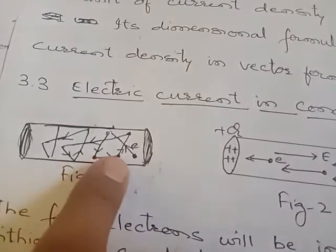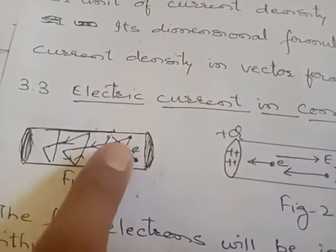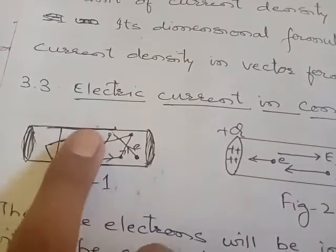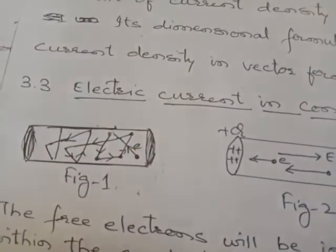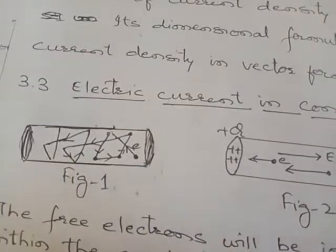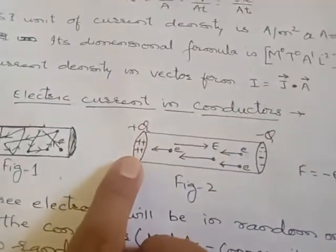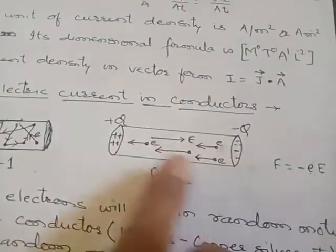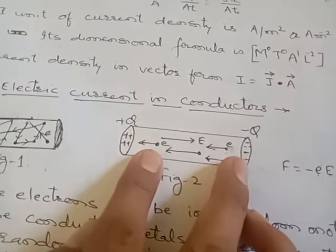So the net flow becomes zero. Millions of electrons are there in the conductor. All the electrons collide with each other and when they are colliding they are not moving in one particular direction. So for that, we connect a positive charge potential and a negative charge on both sides.